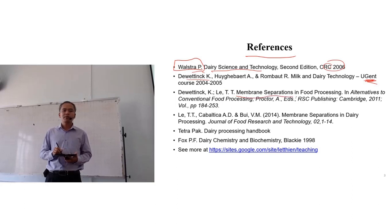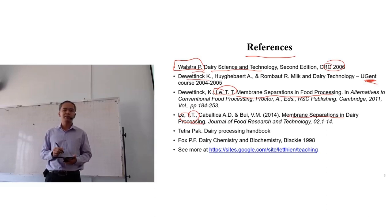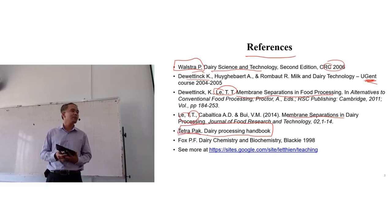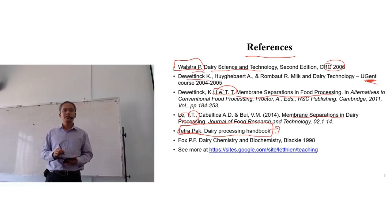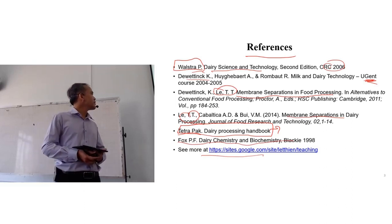There is also a chapter on membrane separation in food and dairy processing — if you look carefully you will see my name on it. Another useful reference is the Dairy Processing Handbook by Tetra Pak, which is also available free online. Tetra Pak is a well-known group specializing in packaging solutions. The book is simple and easy to understand, but you need to learn this course first to fully appreciate it.